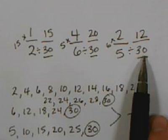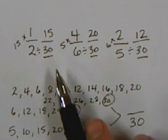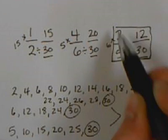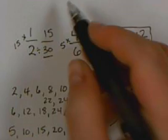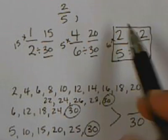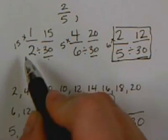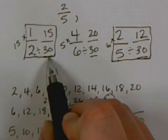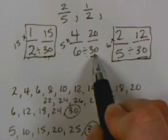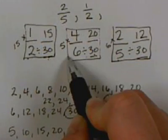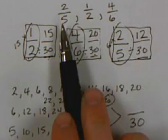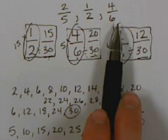Now all we have to do is figure out least to greatest. 12 thirtieths is smaller than 15 and 20 thirtieths. So with this set of fractions, 2 fifths is going to be the smallest fraction. Our next one would be 15 thirtieths, but we're going to put the original fraction: 1 half. Our biggest fraction is 20 thirtieths, but we're going to put 4 sixths. So now these original three fractions are in order from least to greatest: 2 fifths, 1 half, and 4 sixths.